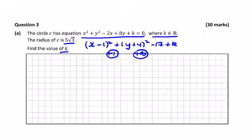So our equation becomes x minus 1 squared plus y plus 4 squared minus 17 plus k equals 0. If we bring this over to the right hand side, it will become equal to plus 17 minus k.